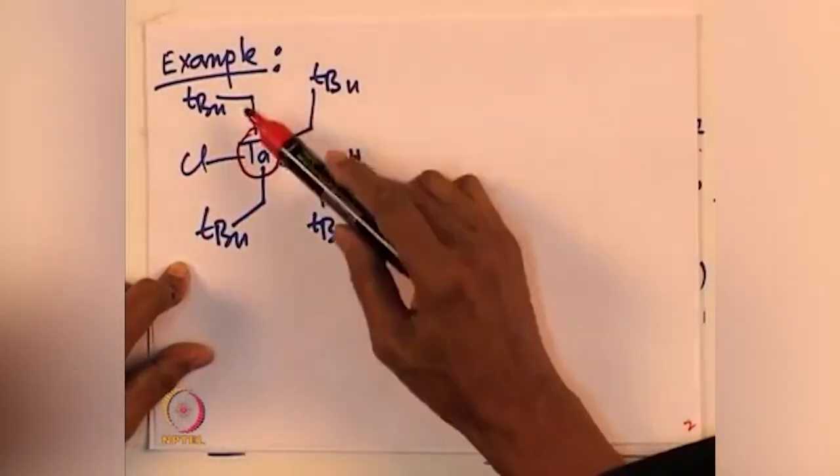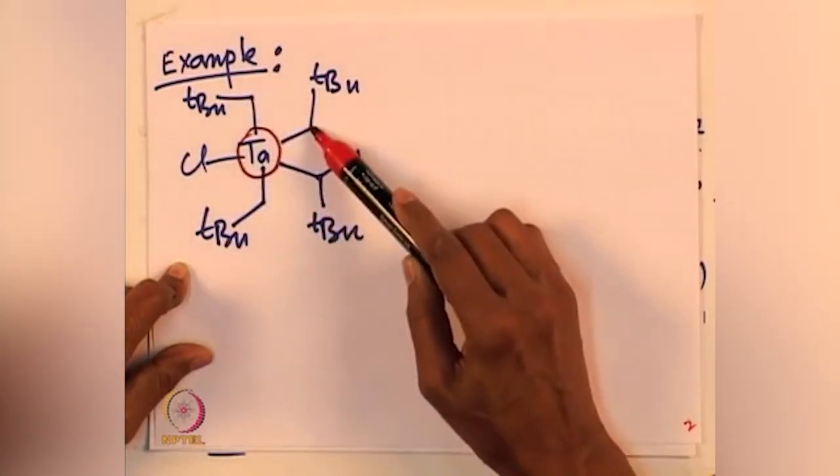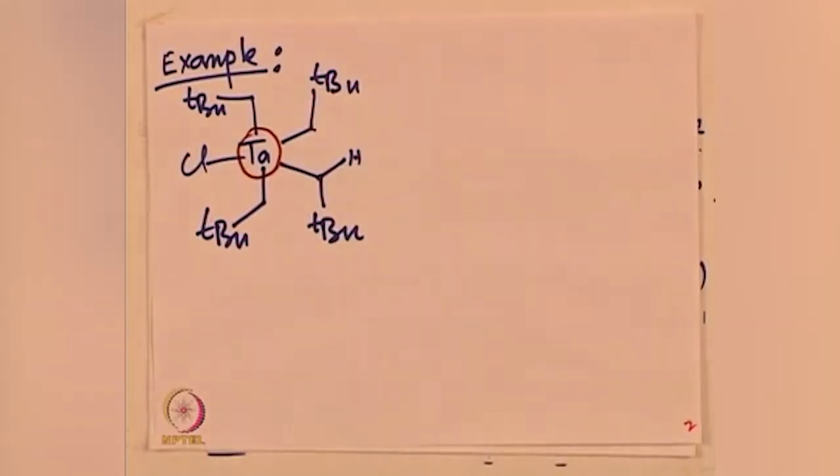We have previously seen many examples of alpha elimination. Now let us look closely at a real-life example of alpha abstraction by Schrock. It is a tantalum complex. We have tantalum at the center with four alkyl groups. Most interestingly, at every alpha carbon center there is a hydrogen atom available, but at the beta center there is no C-H bond available. It is a highly engineered molecule — an organometallic intermediate designed so that there is no beta hydrogen. The only hydride present is the alpha hydride.